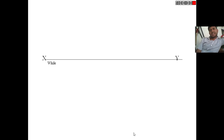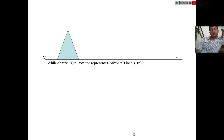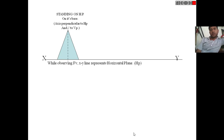Let's consider one pyramid resting or standing on the horizontal plane. If it is standing on HP on its base, its axis is perpendicular to HP and hence parallel to VP. In this case, if we look from the front side, the front view will look like a triangular face.